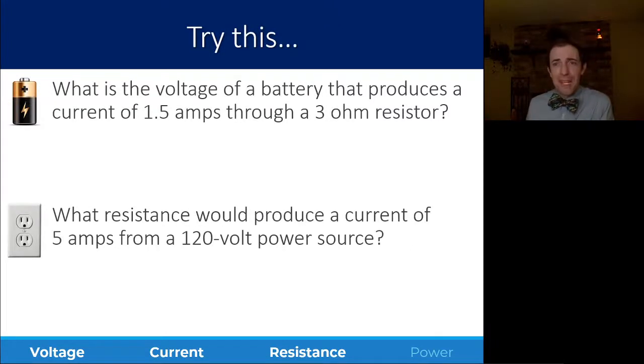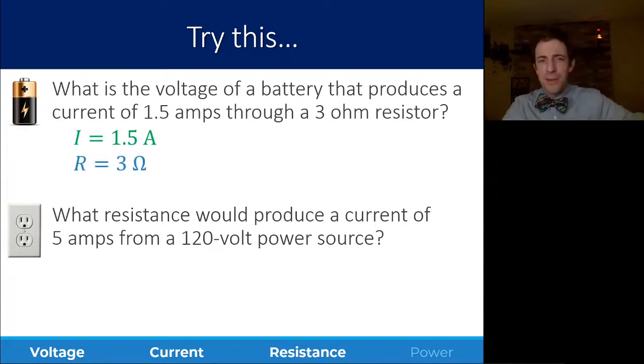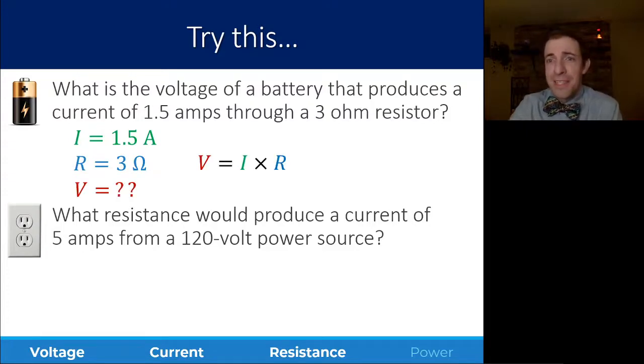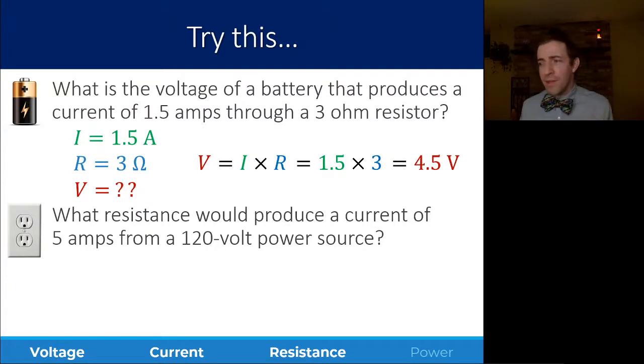Now, here's a couple examples of what that might look like. What is the voltage of a battery that produces a current of 1.5 amps to a 3-ohm resistor? 1.5 amps is your current. 3 ohms is your resistance. And voltage is just current times resistance. I times R, 1.5 times 3 gives you 4.5 volts. So, solving for the unknown.